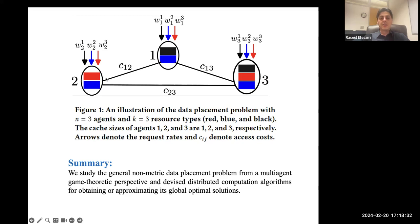And also, we denote the access cost between different agents by CIJs, when we assume nothing on the access cost other than they are non-negative. So the goal is to place these resources in the agent's cache in order to minimize the overall delay cost to the clients.